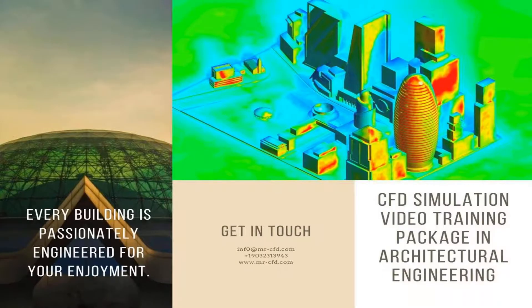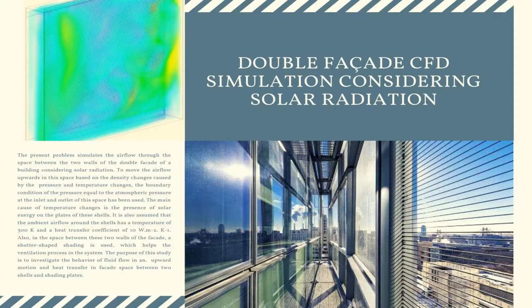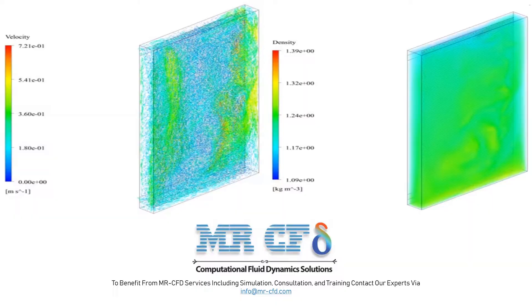Let's present the CFD simulation training package containing 10 different architectural engineering CFD projects. First, we investigate the double facade CFD simulation considering solar radiation. The present problem simulates the air flow through the space between the two walls of the double facade of a building considering solar radiation.